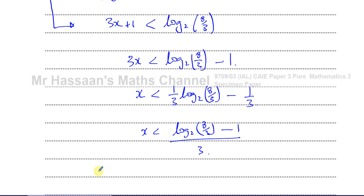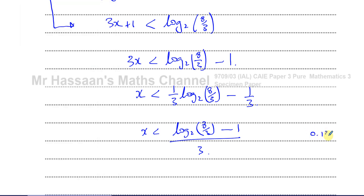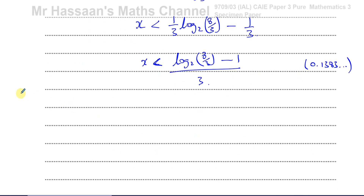I'm going to find the decimal value of this to compare it with other methods. We don't write the decimal for this question since they asked for an exact answer, but working it out gives 0.1383 to 4 decimal places. The mark scheme uses ln, so I'll show you how to use ln as well. That's method one — the method I would use, and I think it's the easiest.